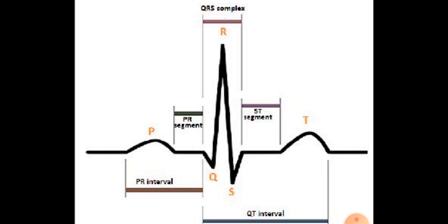By counting the number of QRS complexes at a given period of time, we can determine the heartbeat rate of an individual. From this we can find out whether the heart is working properly or not. If we get the normal rate of 70 to 72 beats per minute, that means the heart is functioning normally.